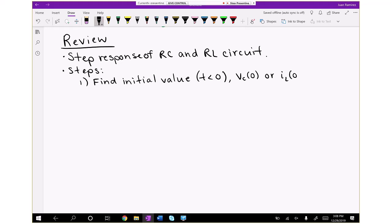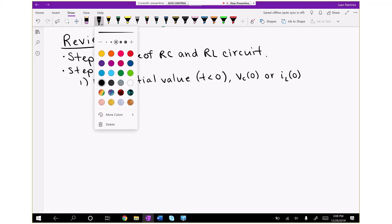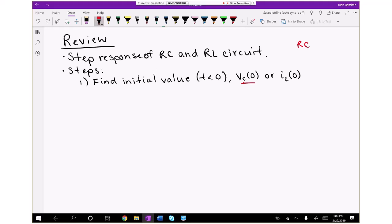Capacitors get replaced with an open circuit, inductors get replaced with a short circuit. If you have an RC circuit, you're looking for capacitor voltage. If you are looking at an RL circuit, you're looking for inductor current.